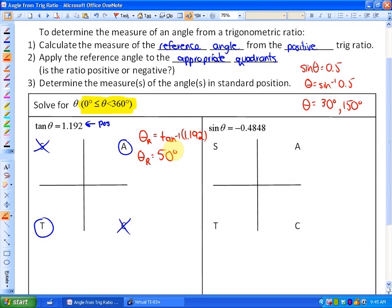So the last step is to apply the reference angle to the appropriate quadrants. So let's apply the reference angle of 50 degrees to both of these quadrants. If we have a reference angle of 50 degrees in quadrant 1, the standard position angle would be 50 degrees. And our other answer would be in quadrant 3, 180 plus 50 would be 230 degrees.